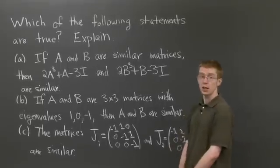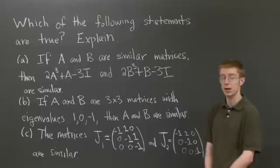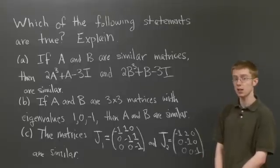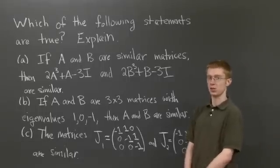The first statement is if A and B are similar matrices, then 2A cubed plus A minus 3 times the identity is similar to 2 times B cubed plus B minus 3 times the identity.